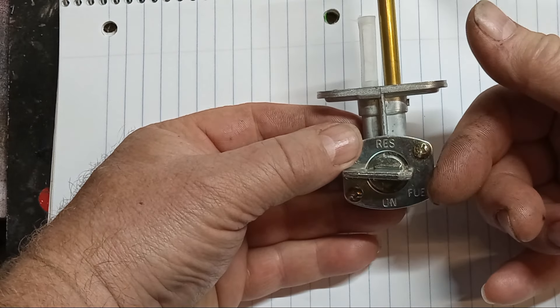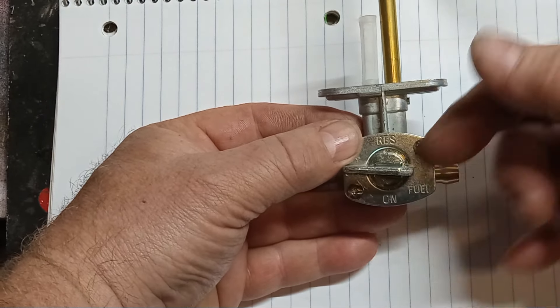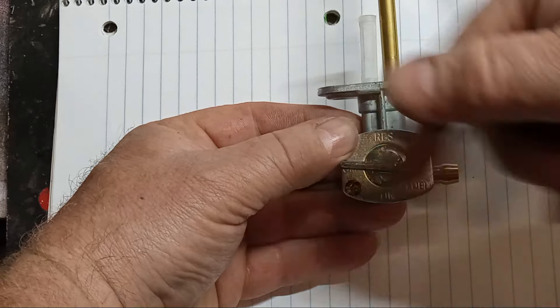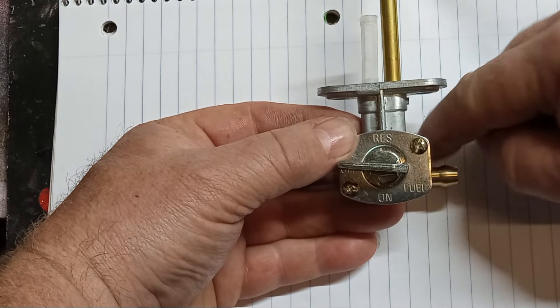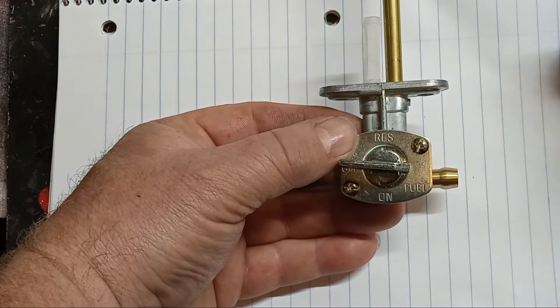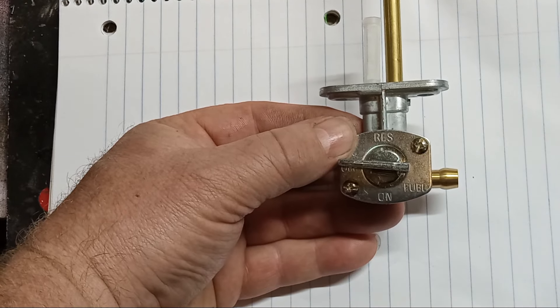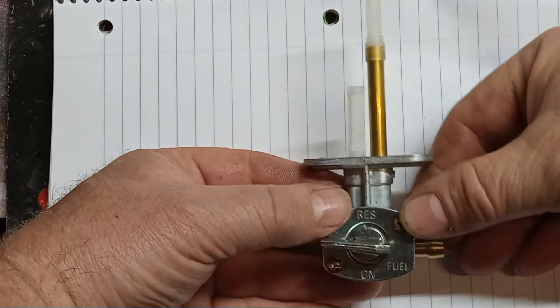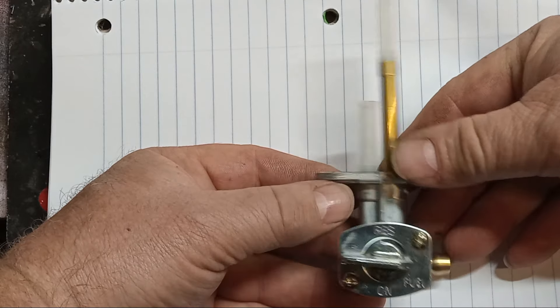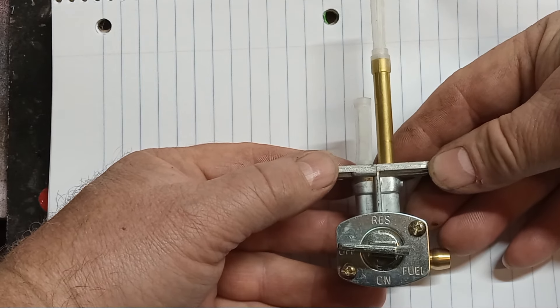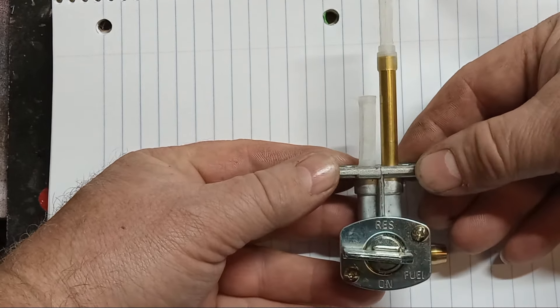Some people don't like those because sometimes the diaphragm can go bad and then the fuel won't shut off or it can leak out the back into that vacuum hose. I haven't had that too often, but I can see the concern. When someone says they switch to a mechanical fuel petcock, I'm not too shocked.